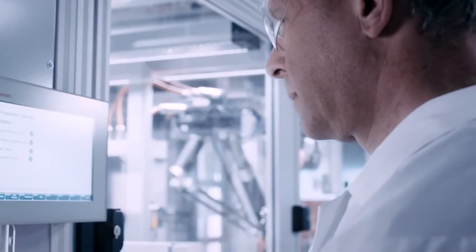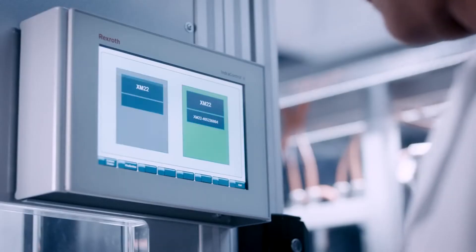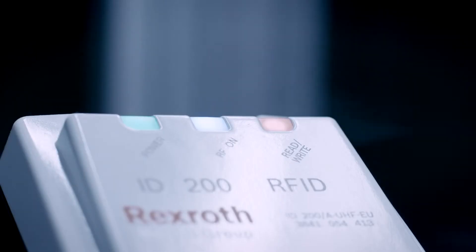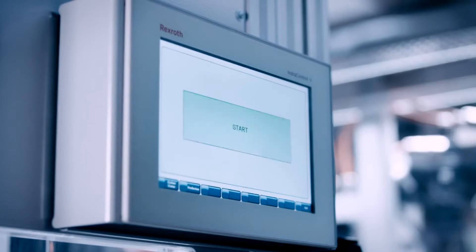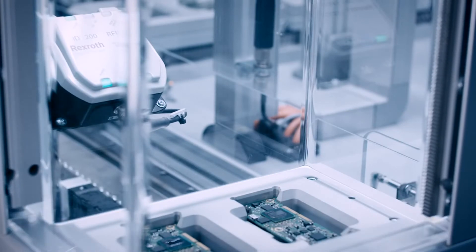An RFID tag connects the conductor board with the order saved in the company software. Every station reads the RFID tag and receives all instructions about which processing steps are necessary. Therefore, the product steers itself through the plant.